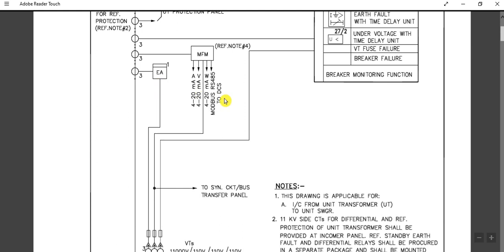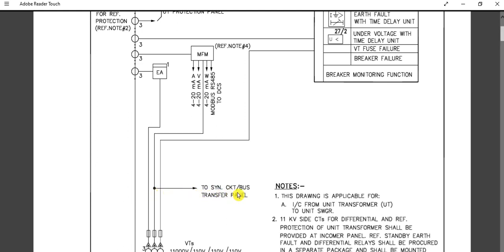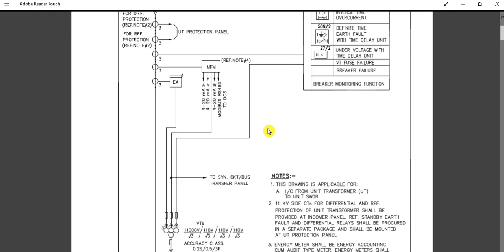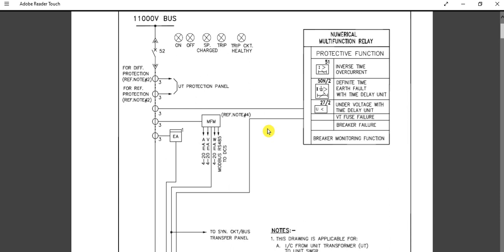From this VT there is also a tapping to the synchronizing circular bus transfer panel. If there is an ABT (automatic bus transfer) panel, this VT voltage signal is required and will come from here. This is the typical 11kV or 6.6kV single line metering and protection diagram. Note that differential protection and REF protection are provided for medium voltage higher-rated feeders.